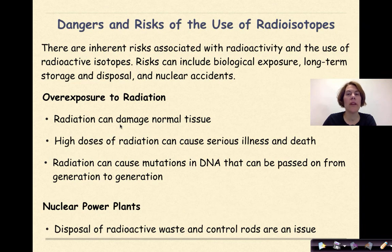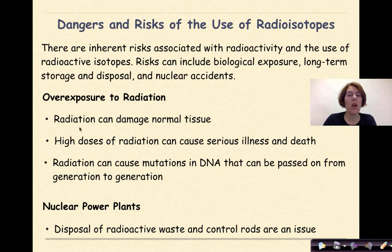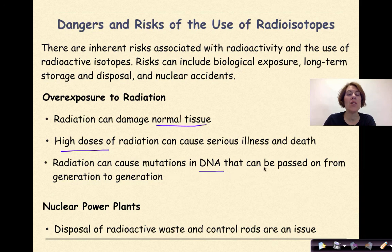Dangers and risks of the use of radioisotopes. There are inherent risks associated with radioactivity and the use of radioactive isotopes. Risks can include biological exposure, long-term storage and disposal, and nuclear accidents. Overexposure to radiation can damage normal tissue. High doses of radiation can cause serious illness and potentially death. Radiation can cause mutations in DNA that can be passed on from generation to generation. There are also inherent risks with nuclear power plants, including the disposal of radioactive waste and control rods.